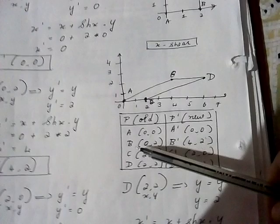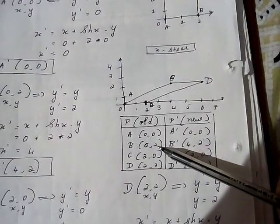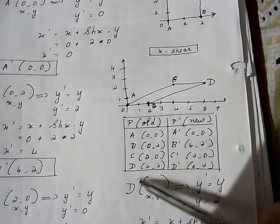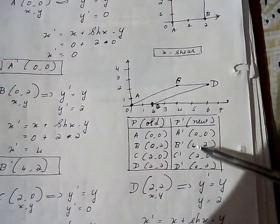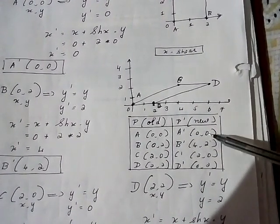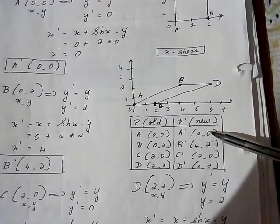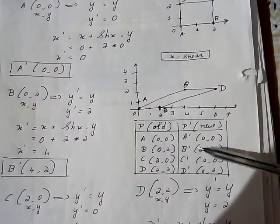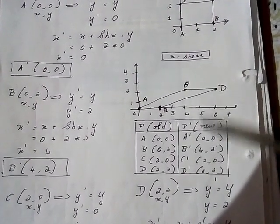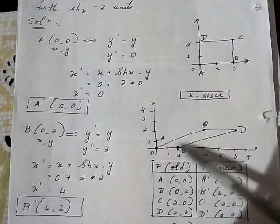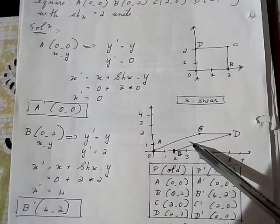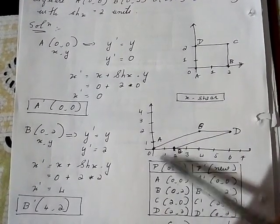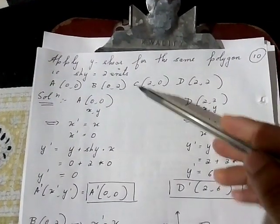Summary: old coordinates A(0,0)→(0,0), B(0,2)→(4,2), C(2,0)→(2,0), D(2,2)→(6,2). The x values have changed but y values remain intact. Plotting the new graph: the old polygon becomes a new polygon with distortion in the x axis — it slants and becomes a parallelogram. There is change only in x, no change in y direction.